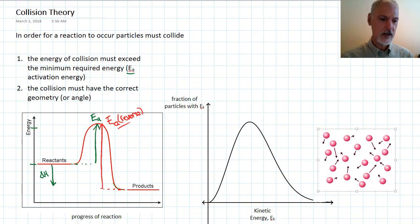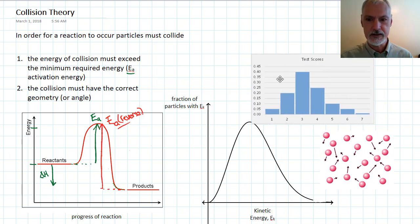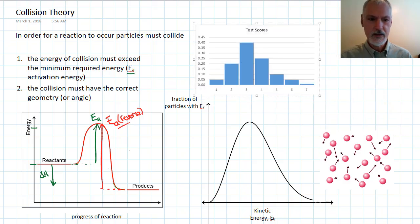Now, this graph is derived by studying a group of molecules and taking measurements of their speed or kinetic energy. I'm going to use an analogy here to explain how this can be done. Consider, if you will, a test, perhaps an IB chemistry test, and here you can see the scores on that test.